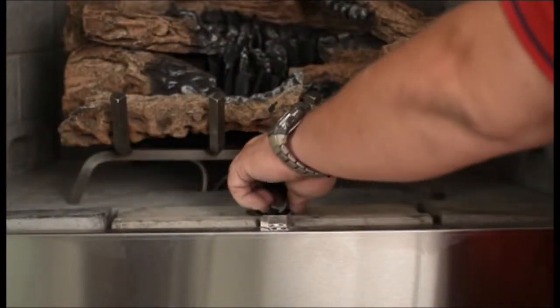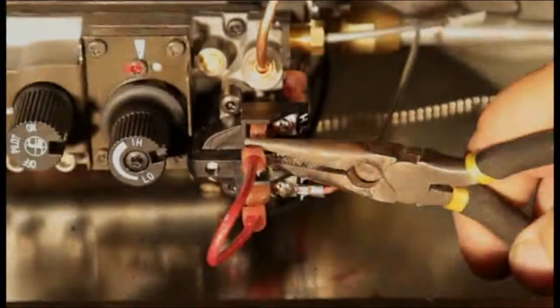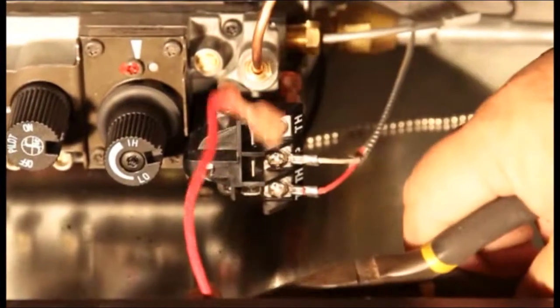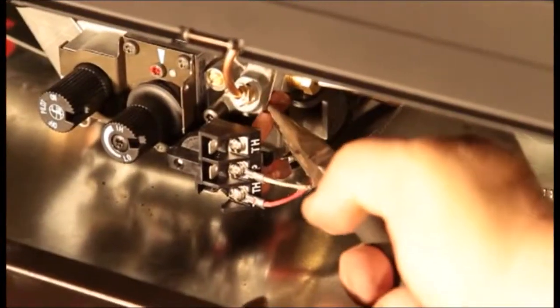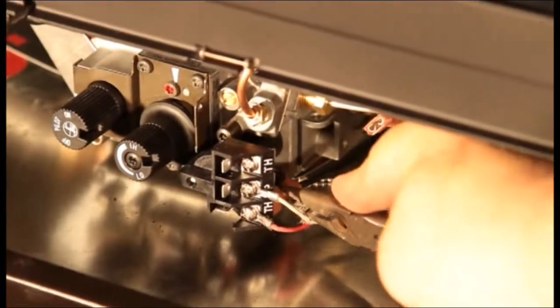Remove the center front access brick by pulling up. If unit is equipped with jumper wire, remove and discard. Note the jumper wire is located on front or rear terminals of the gas control valve.